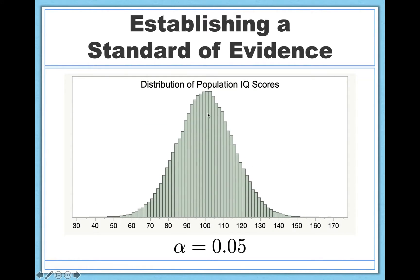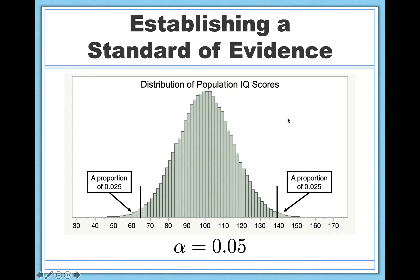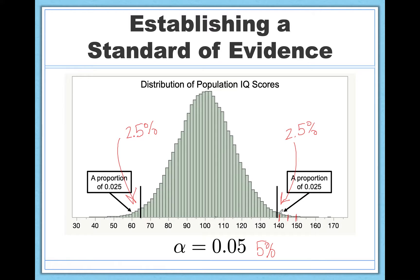Let me illustrate that visually. Our alpha level of 0.05 determines where the cutoffs are — exactly what's really unlikely under the null and what's very likely under the null. It takes that 5% and splits it between the very low end, 2.5% of possible outcomes here, and the high end, 2.5% of possible outcomes here. So if we find a value like 140, 150, or 145, this is very unlikely under the null because it's within this boundary. Similarly, if we find 60, 55, or 50 — again, very unlikely under the null. It's extreme enough according to our alpha level of 0.05.